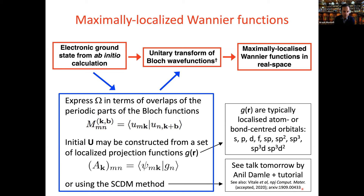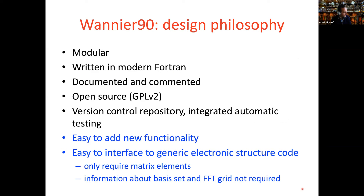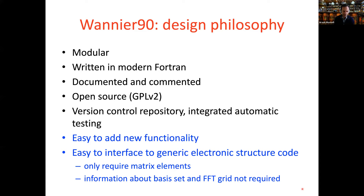From the beginning, when Jonathan and I started thinking about writing Wannier90, we had a number of things in our minds regarding the design philosophy. We wanted it to be modular, written in modern Fortran, well documented and commented. We had decided quite early on that it would be an open source code — we both had experience of commercial software development projects in materials modeling and decided we wanted this one to be open source. And to have a version control repository and a suite of tests; in those days they weren't integrated and automatic tests, but we nonetheless had a small suite of tests.